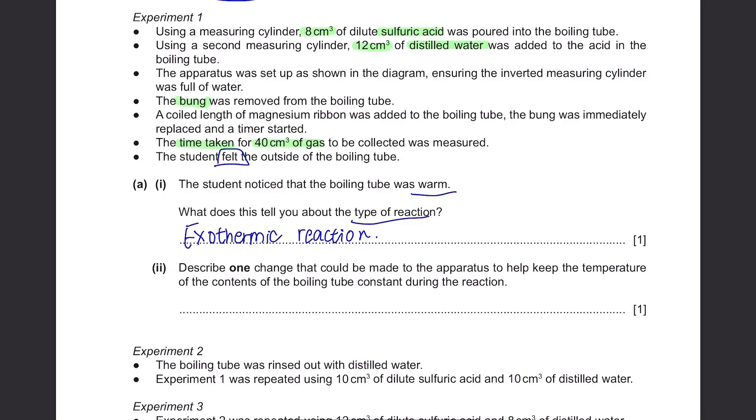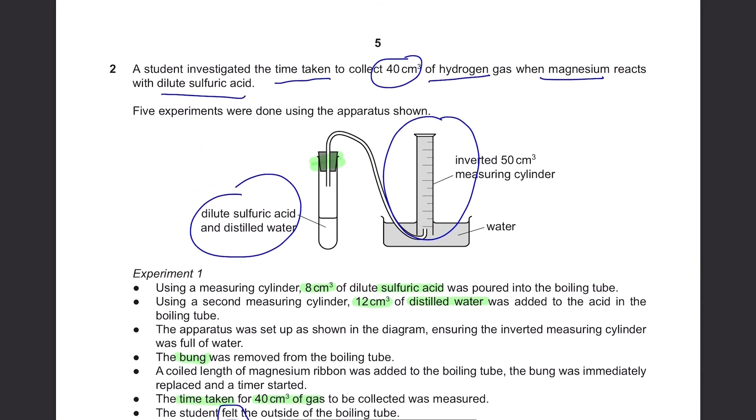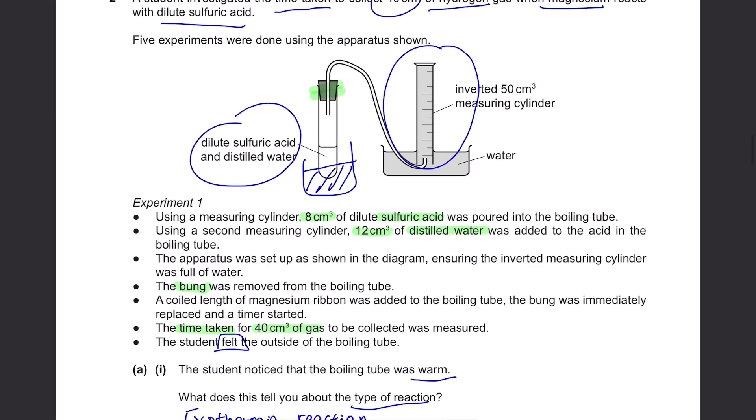Describe one change that could be made to the apparatus to help keep the temperature of the contents of the boiling tube constant during the reaction. Now they're not asking how you're going to measure the temperature. You just need to think of a method to keep it constant. And when you want to keep the temperature constant in an experiment, we use a water bath. So we can just place the water bath around this boiling tube. So dilute sulfuric acid and magnesium will be exposed to constant temperature.